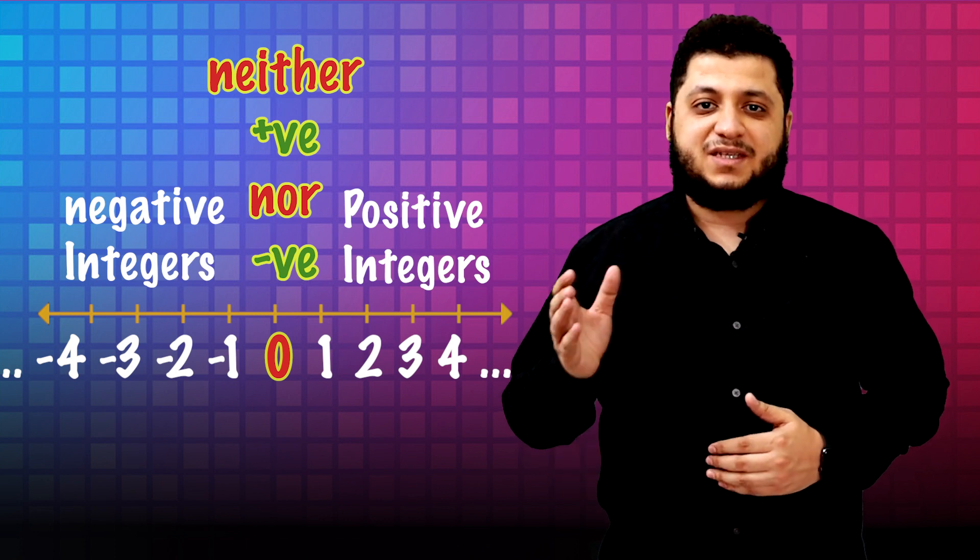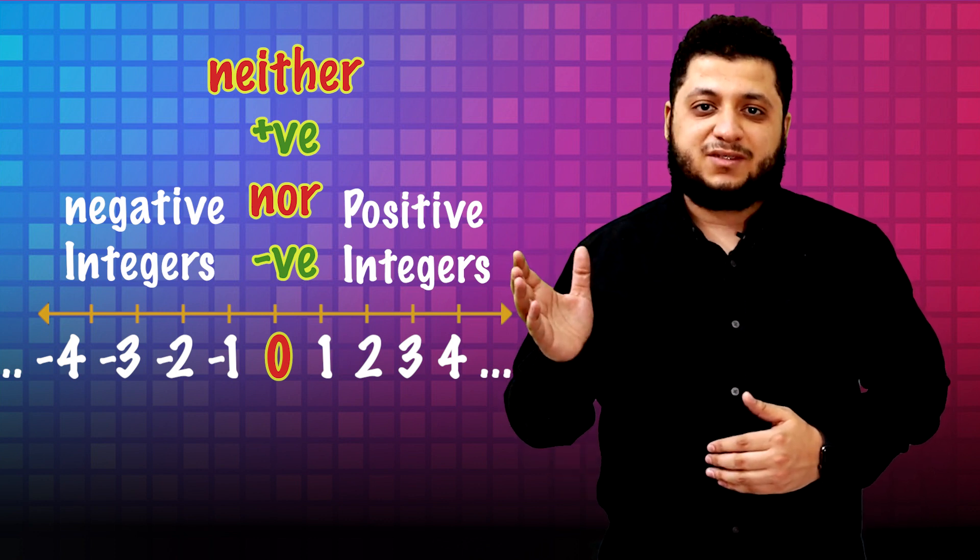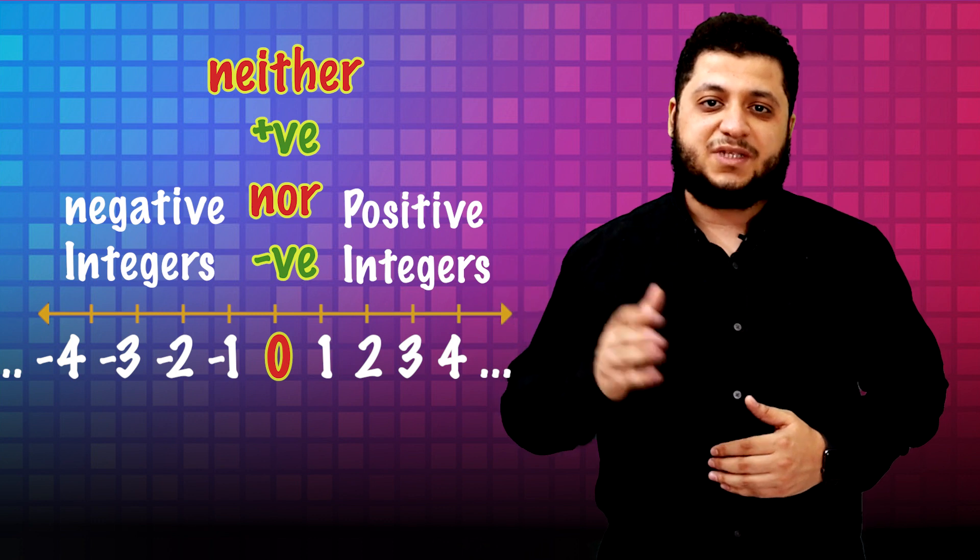So on number line, you can find zero and positive integers or counting numbers and their opposites, which are negative integers. So what is the opposite number? The opposite number is a number which is located on the same distance from the zero on number line, but in different direction or different side.